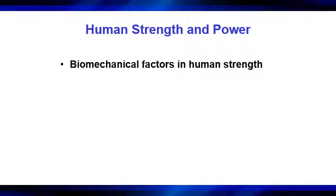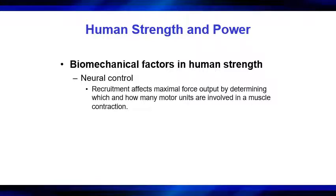Looking at biomechanical factors in human strength, the nervous system is very important. There are adaptations in the nervous system when developing strength. Recruitment affects maximal force — we have to look at which and how many motor units are involved in a muscle contraction. A motor unit operates on the all-or-none principle: when activated, all fibers contract maximally or don't contract at all. Your ability to grade how much force a muscle puts out involves how many motor units are involved.